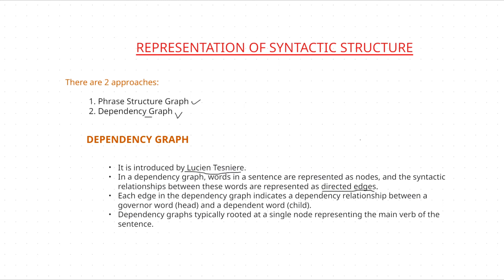Another difference is what edges represent in a dependency graph — it is the relationship between two different words using directed edges. When you take phrase structure graph, in order to construct the relationship between two phrases we used undirected edges, but when it comes to dependency graph you are constructing this relationship by using directed edges. We use directed edges to know which node is the head node and which node is the child node. The node an edge comes out from is the head node, and the node it points to is the child node.